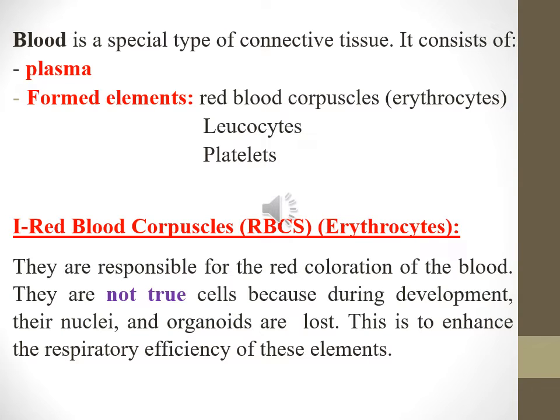Blood is a special type of connective tissue and it consists of plasma and formed elements. The formed elements contain red blood corpuscles, leucocytes, and platelets.